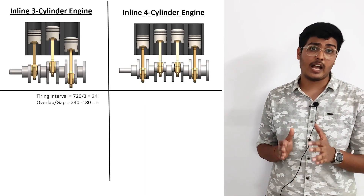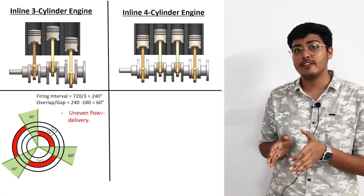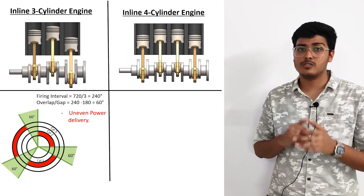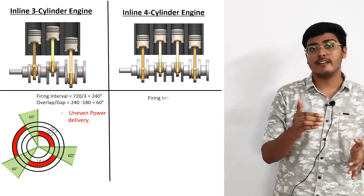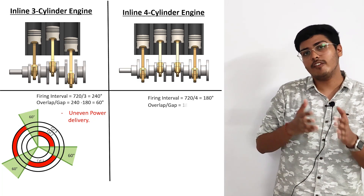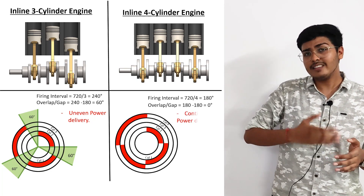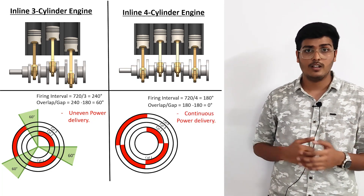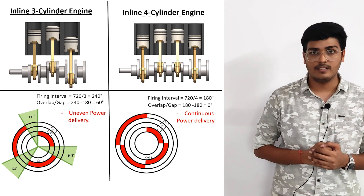Checking the firing interval for the inline three: there is a 60° gap between each power stroke, causing uneven power delivery that affects smoothness. For the inline four, the firing interval is 720 ÷ 4 = 180°, and 180° − 180° = 0°, meaning we are continuously getting power with no gap between power strokes. So the inline four is smoother compared to the inline three in terms of firing interval. This is how you can compare the smoothness of different engines in terms of primary forces, secondary forces, and firing interval.